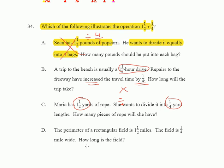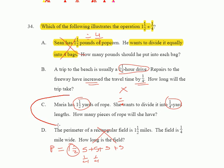Option D: The perimeter of a rectangular field is one and one-half miles and the field is one and one-quarter miles wide. How long is the field? That doesn't fit because to find the perimeter you add all sides together — two sides would be one-quarter and one-quarter — and you'd have to divide differently to find the remaining sides. That's out. The answer is clearly C.